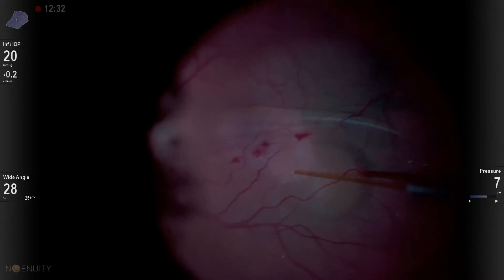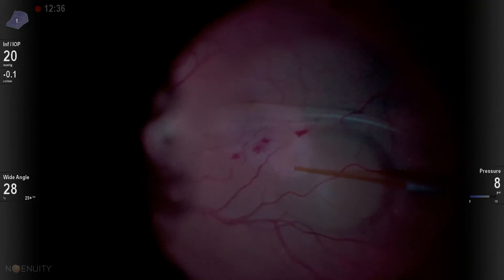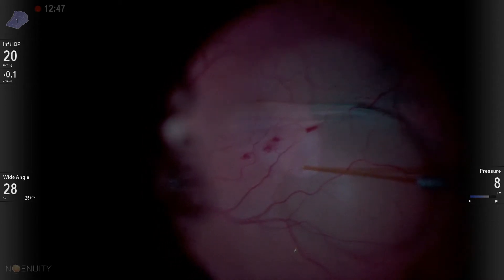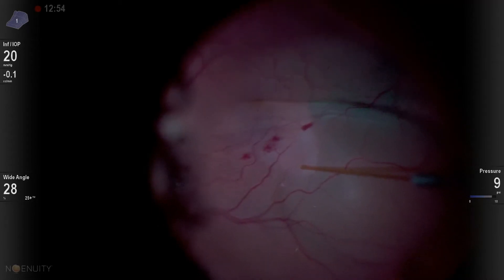So I'm using a 39-gauge cannula, and I'm injecting BSS underneath the retina here, and the first problem is that the BSS doesn't dissect under the macula. It actually dissects out towards the periphery. And so I'm thinking to myself as I inject this, how in the world can I get this BSS to go the direction that I want?